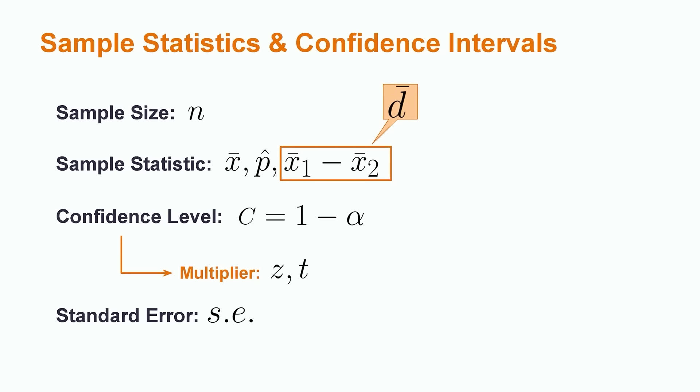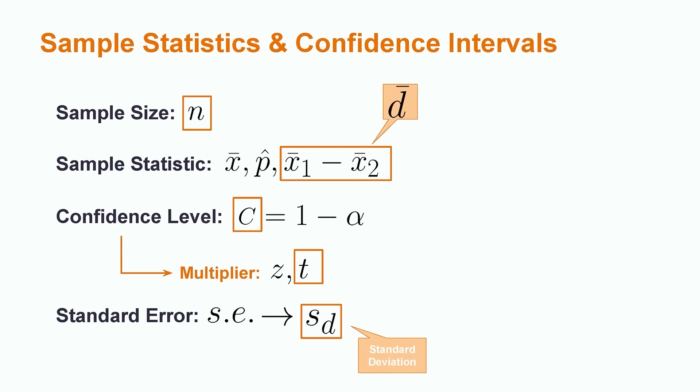For the mean paired population difference, our specific sample statistic is x1 bar minus x2 bar, which we will frequently write as d bar, representing the average difference. Beyond this, we will also need the sample size, a confidence level C, a multiplier derived from the Student's t-distribution, and a standard error, which will be related to the standard deviation of the paired differences.